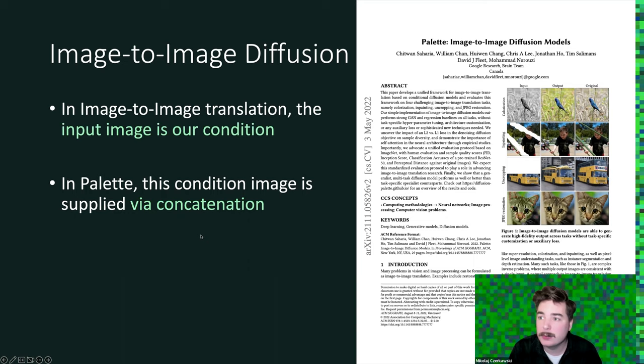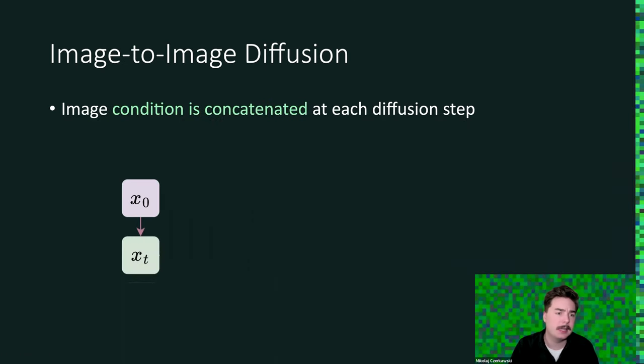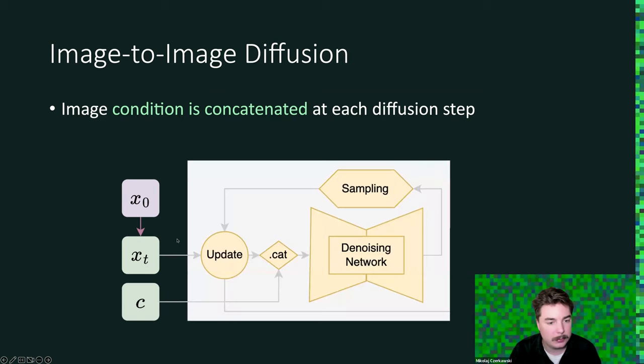And that's what we will do for our experiments as well. Like in the standard version of diffusion, we have our clean sample. We use the forward process to get our x_t, but we also have a condition image. And what we will do is we will concatenate both and feed that into the network.